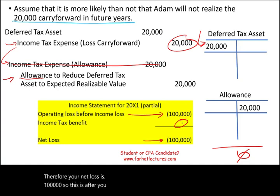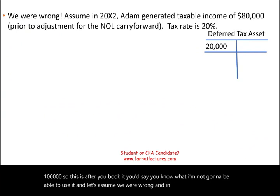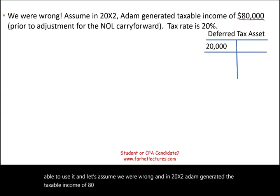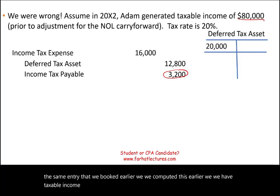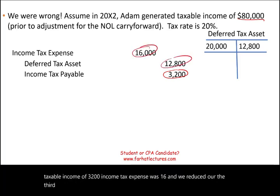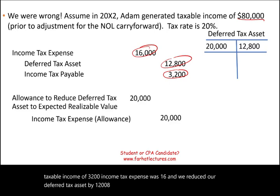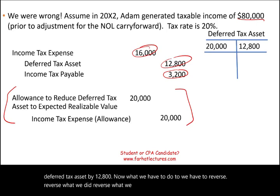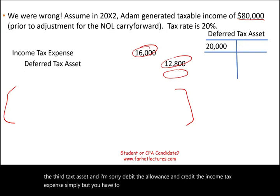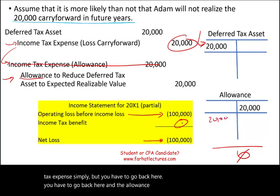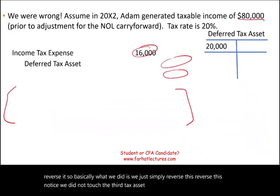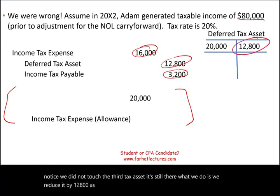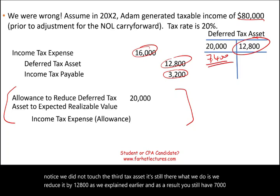So after you booked the valuation allowance, you said you wouldn't be able to use it. But let's assume we were wrong. In 20X2, Adam generated taxable income of $80,000 prior to the adjustment. We're going to book the same entry as earlier: income taxes payable of $3,200, income tax expense of $16,000, and we reduce the deferred tax asset by $12,800. Now we also have to reverse what we did: debit the allowance to reduce the deferred tax asset and credit income tax expense to reverse it. Notice we did not touch the deferred tax asset itself — it's still there. We reduce it by $12,800 as explained, and as a result, you still have $7,200 in the deferred tax asset for future years.